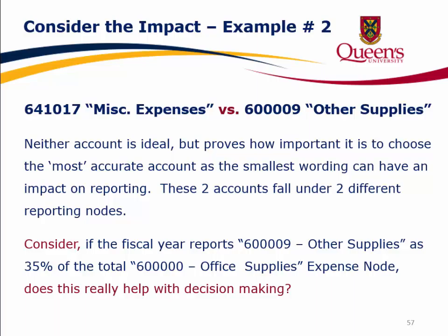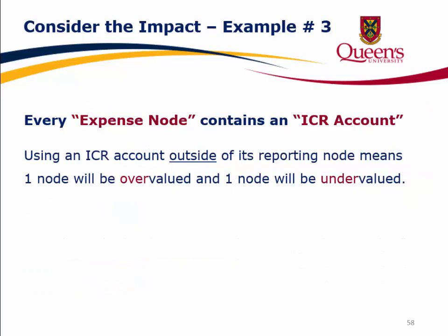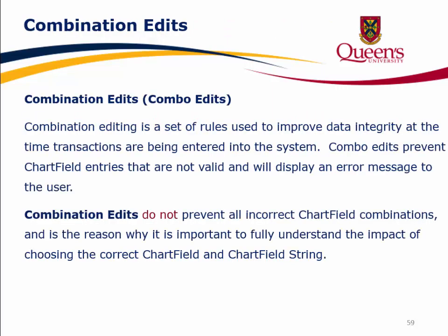Consider: if the fiscal year reports Account 600009 Other Supplies as 35% of the total of the 600000 Office Supplies Expense node, does this really help with decision making? Example 3: every expense node contains an ICR account — using an ICR account outside of its reporting node means one node will be overvalued and one node will be undervalued. Combination editing is a set of rules used to improve data integrity at the time transactions are being entered into the system. Combo edits prevent chartfield entries that are not valid and will display an error message to the user. However, combination edits do not prevent all incorrect chartfield combinations, which is why it is important to fully understand the impact of choosing the correct chartfield string.